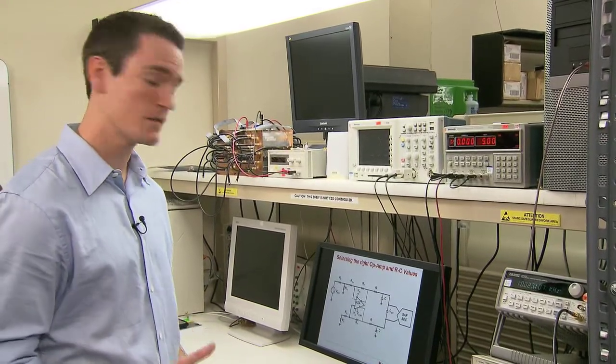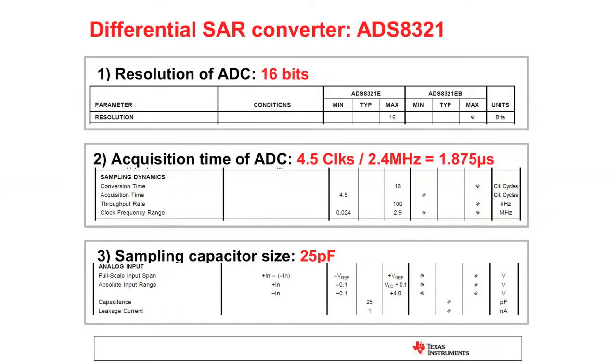So first, what do you need from the ADC datasheet? For this one, we use the ADS8321. This is a 16-bit, very precise, high-speed SAR ADC. You need three important parameters: the resolution, the acquisition time, and the sample and holding capacitor value.